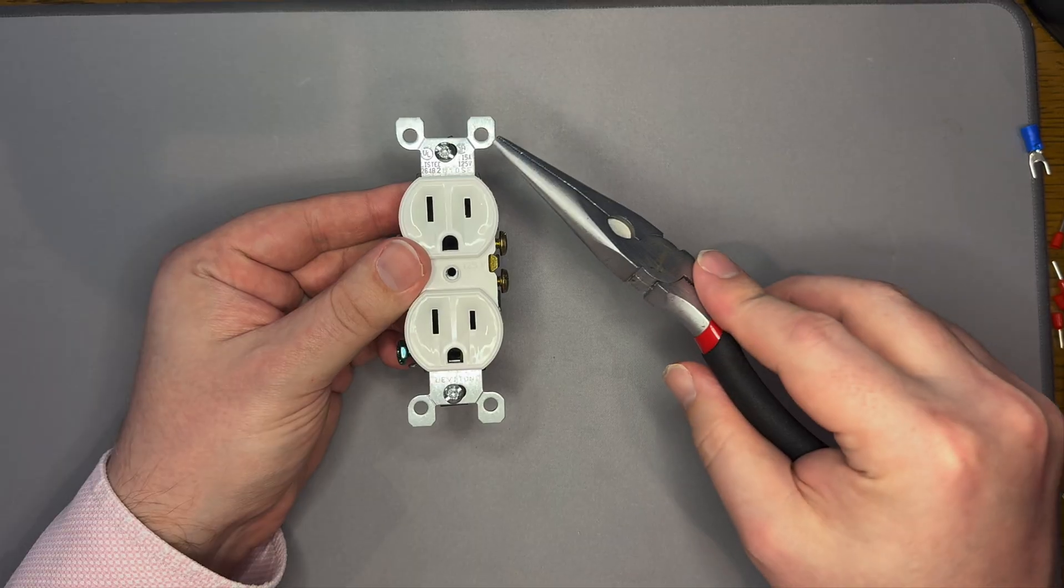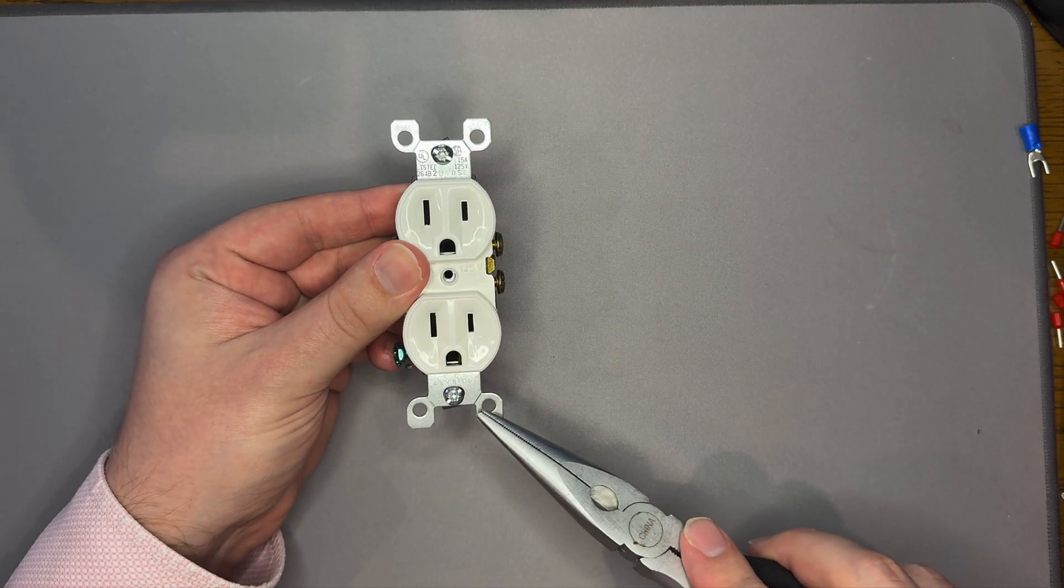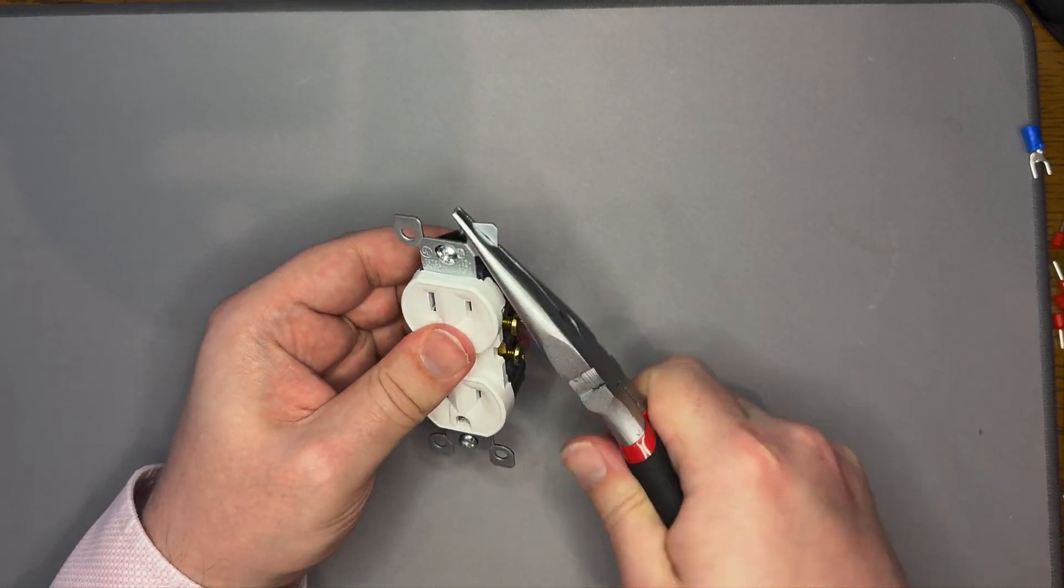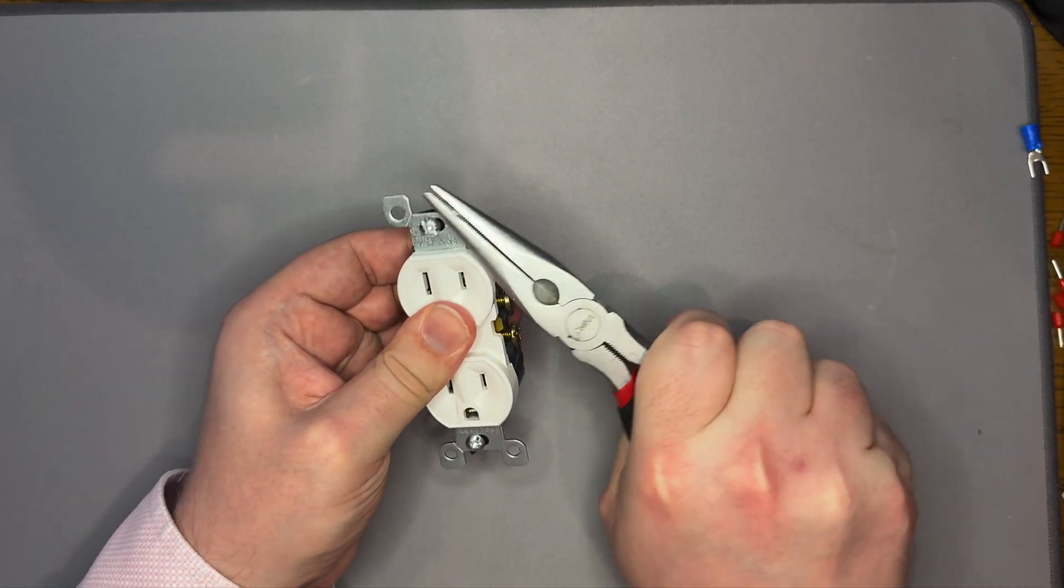Now, let's prepare the outlet. We'll start by removing the four wings that surround the mounting screws. Using a pair of pliers, grip the wings and bend until they break off. Repeat for all four wings.